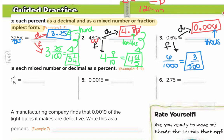So the first thing we did was take the percent, move the decimal two to the left to get your decimal, then use place value to get your fraction and simplify.